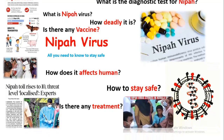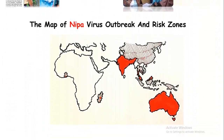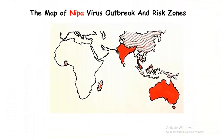From the WHO guidelines, the red marked zones are the top risk zones of Nipah virus outbreak, and the striped lines indicate the potential other risk zones.